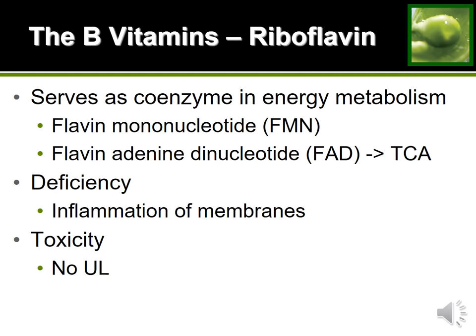The next B vitamin is riboflavin, which makes coenzyme FAD. From the metabolism chapter, FAD's role in the TCA cycle was to pick up hydrogens and electrons released during the cycle and deliver them to the electron transport chain. FAD is one of two coenzymes responsible for carrying hydrogens and electrons to the electron transport chain, and it's made using riboflavin.